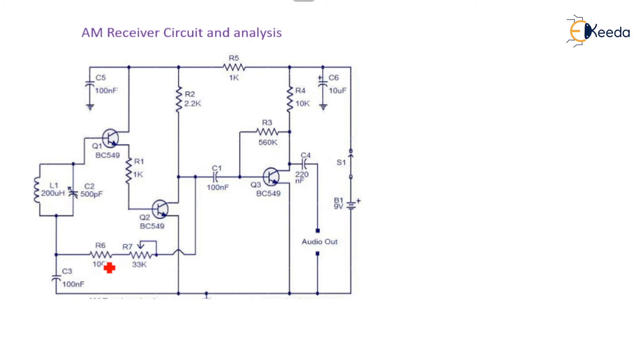The resistors R6 and R7 give regenerative feedback to the output of Q2 and the tank circuit.